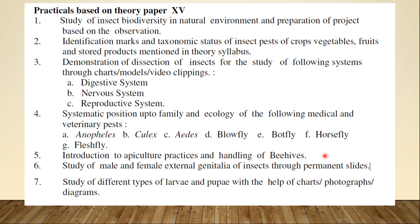The next topic is study of male and female external genitalia of insects through permanent slides. We will be showing you permanent slides, and I will make videos so you can get an idea about the male and female external genitalia. Then we are going to study different types of larvae and pupae with the help of charts, photographs, and diagrams — different insects according to their order have different kinds of larvae and pupae.